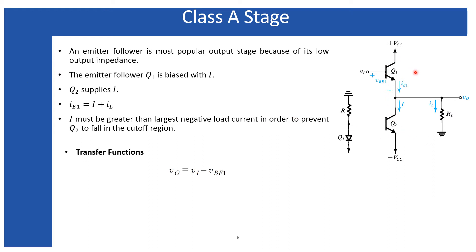When biasing the emitter follower with the current source, we must ensure that during the negative transition of the output swing, the emitter current does not exceed the total biasing current I. If the emitter current exceeds I, transistor Q2 goes to the cutoff region and can no longer support the biasing current, taking the transistor out of bias. For an emitter follower circuit, the output voltage equals the input voltage minus the base-emitter voltage of Q1: Vo = Vi − VBE1.